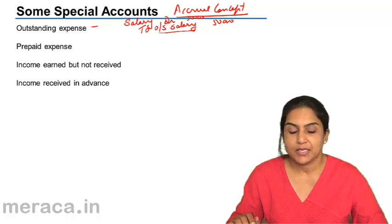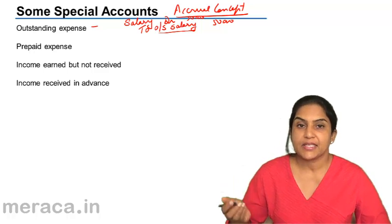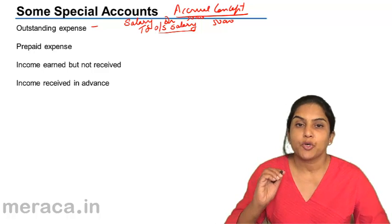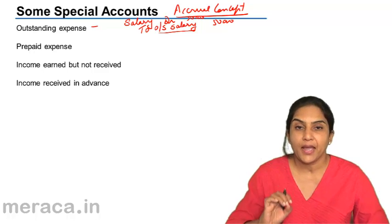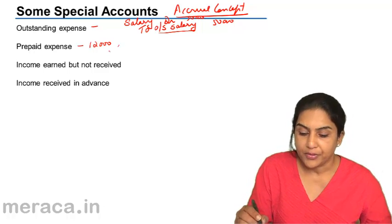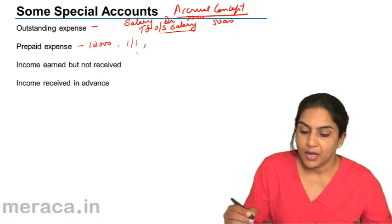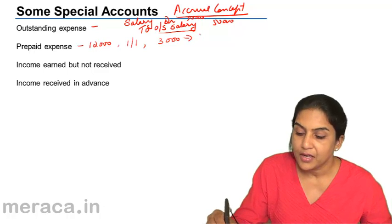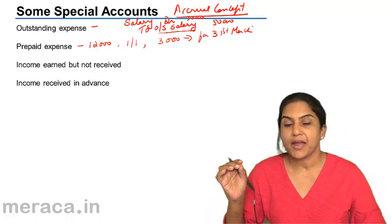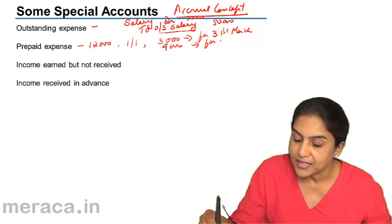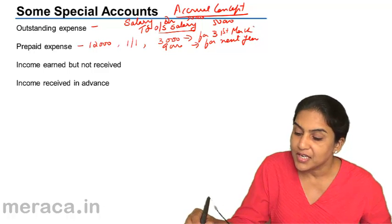What is a prepaid expense? A prepaid expense is an expense paid in advance. Suppose we pay for insurance. Let us assume the insurance expense is 12,000 and we pay this on 1st January. That means the expense up to 31st March — January, February, and March — is 3,000, and the remaining 9,000 is for next year. This 31st March is the current year end.